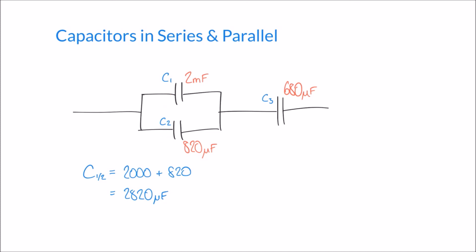Next, I can work out the capacitance of my entire network here by combining in series the capacitance that I've calculated here, C1 in parallel with C2, with this third capacitor, C3.